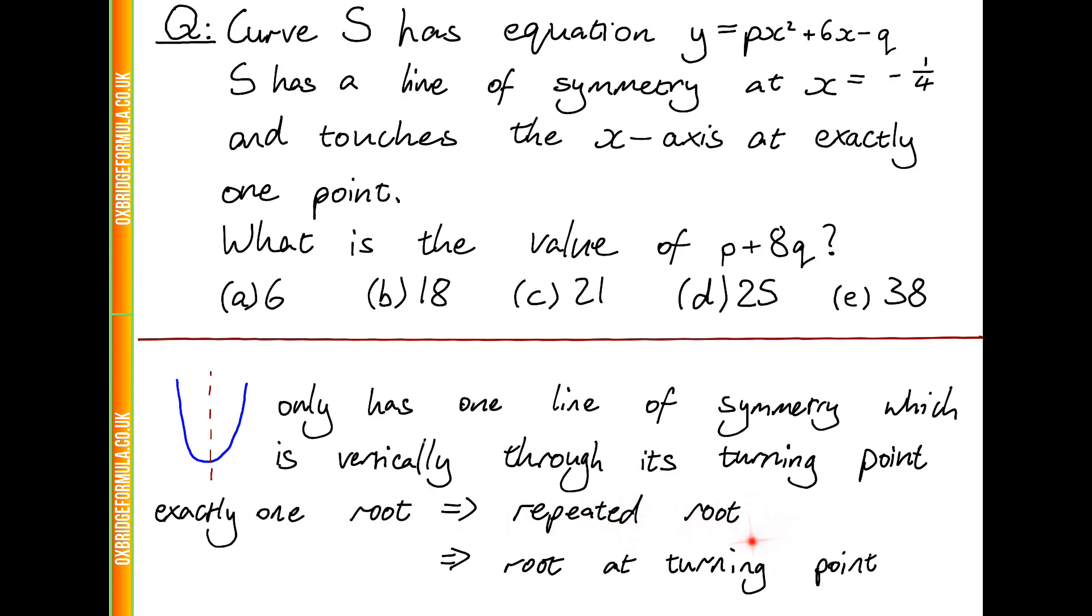So this tells us that the line of symmetry, which is x equals minus a quarter, passes through the turning point, which is the root, and that that root is repeated. So all in all, this information tells us that this equation, or this expression on the right-hand side, has two factors of x plus a quarter, because minus a quarter is a repeated root of this expression.